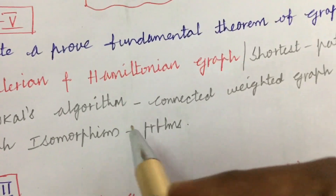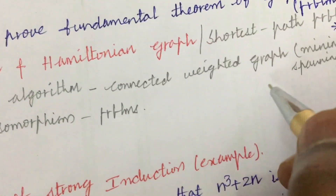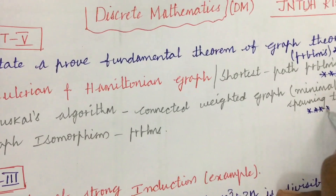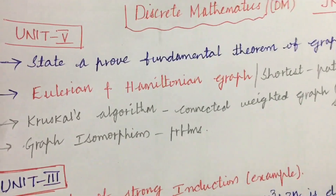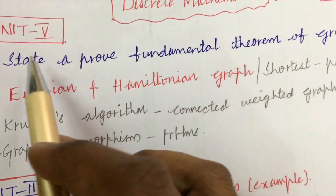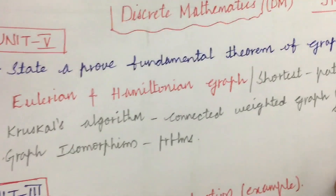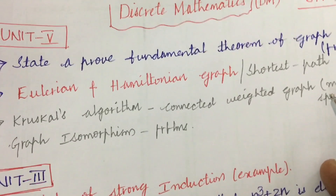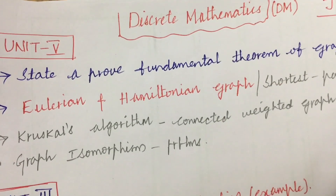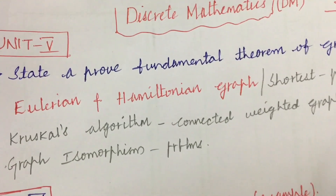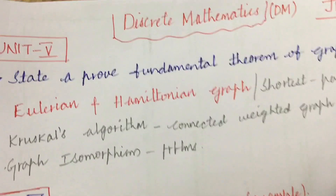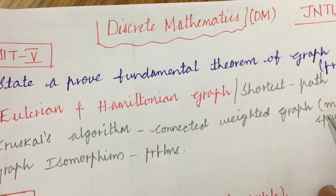Kruskal's algorithm on a connected weighted graph for a minimum spanning tree problem is a very, very important question. Graph isomorphism and problems related to it — if you cover these topics, you are going to get a 15-mark question for sure. As per the exam pattern, 8 questions will be asked of which you are supposed to answer any 5.